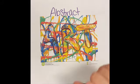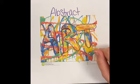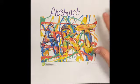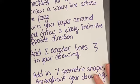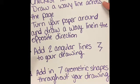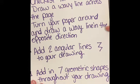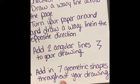What will cut it is if you follow the instructions that I am going to give you. Anytime you need to pause it, you can. Here's your checklist if you need to pause it. Draw a wavy line across the page. Turn your paper around and draw a wavy line in the opposite direction. Add two angular lines to your drawing. Add in seven geometric shapes throughout your drawing.